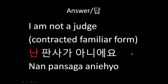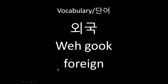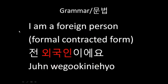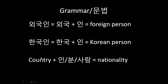Let's learn a new vocabulary word. 외국 means 'foreign' in Korean, and 인 means 'person' in Korean. To say 'I am a foreign person' using the formal contracted I, you'd say 전 외국인이에요. In Korean, nationality can be formed by adding the name of a country plus 인. For example, a Korean person is expressed as 한국인, and similarly, adding 외국 to 인 gives you 'foreign person.'